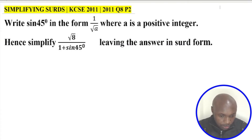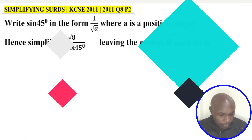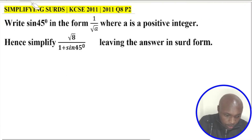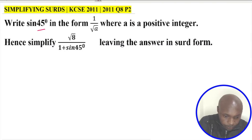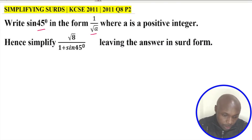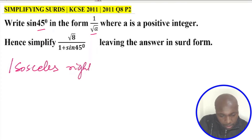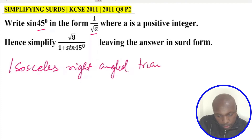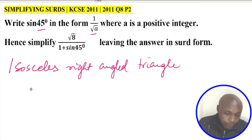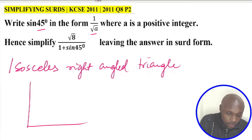So that is the question, let's go straight to the solution. We are required to write sine of 45 in the form 1 over root of a. To do this, we're going to use an isosceles right-angled triangle. I'm going to sketch it here.